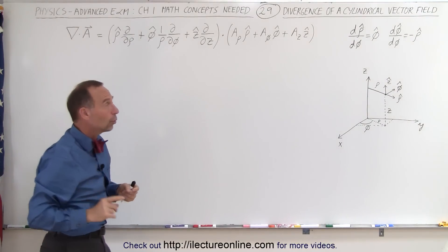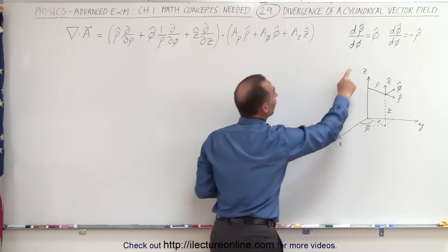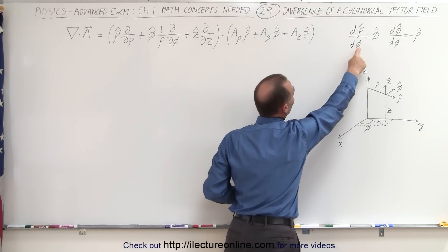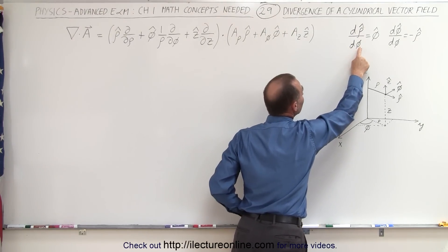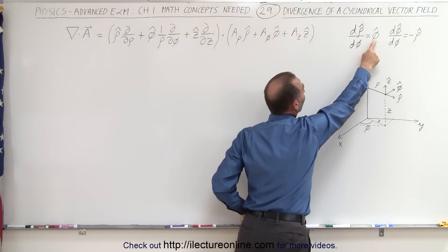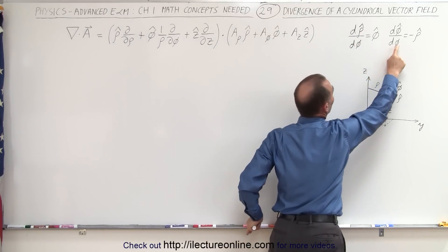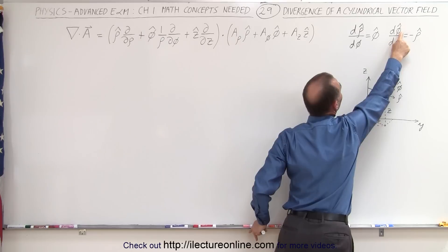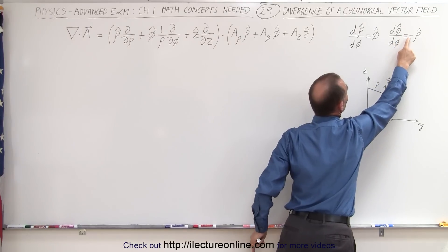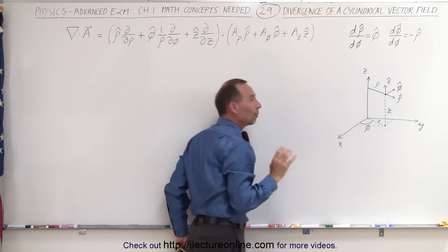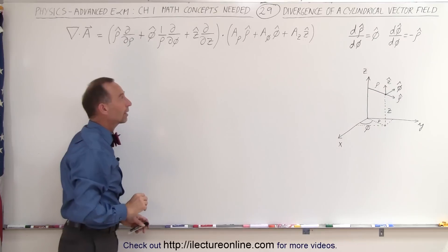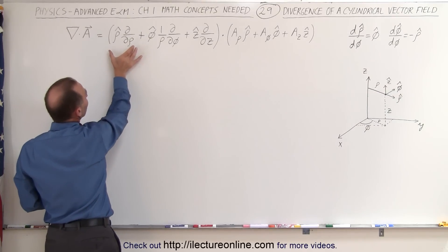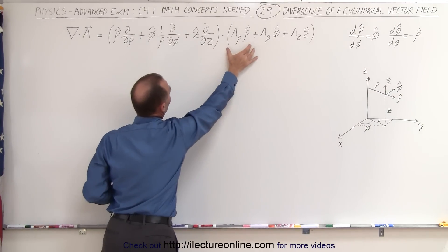We also have to remember that the partial derivative of rho-hat with respect to phi is phi-hat, and the partial derivative of phi-hat with respect to phi equals negative rho-hat. We need to take those into account. First, let's take the partial derivative of the first term with respect to rho, multiplied by rho-hat.